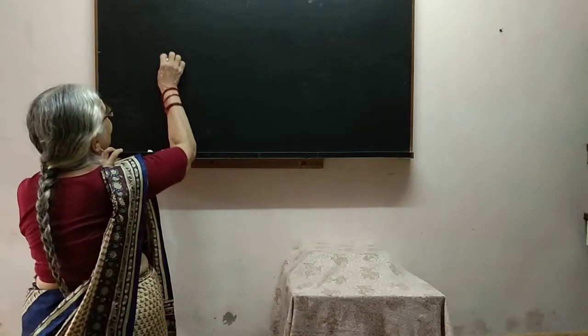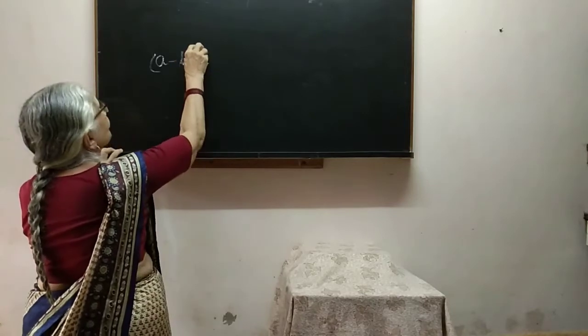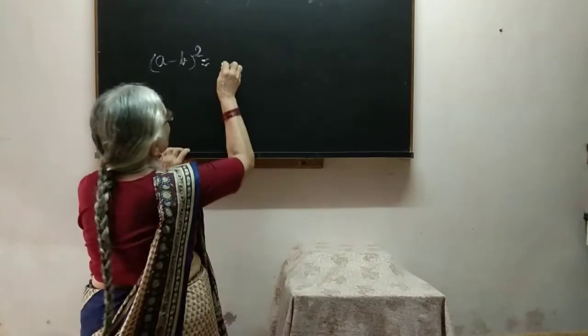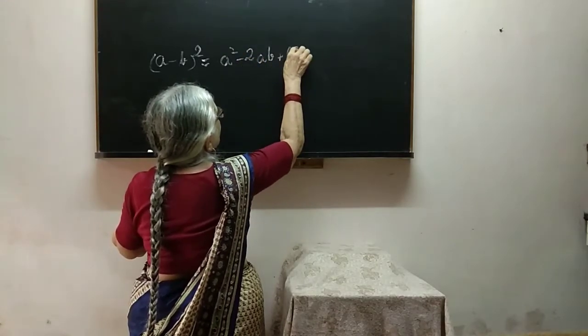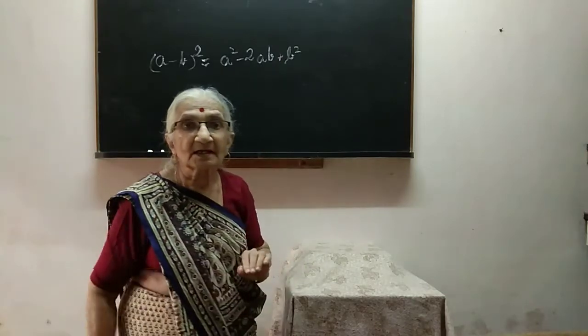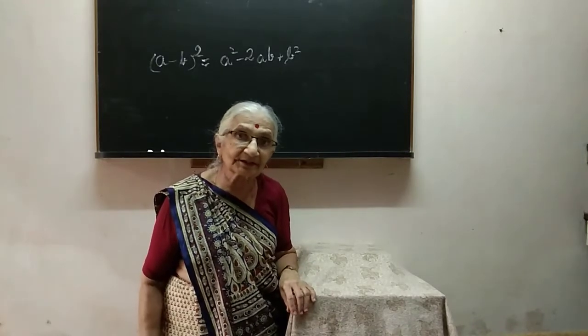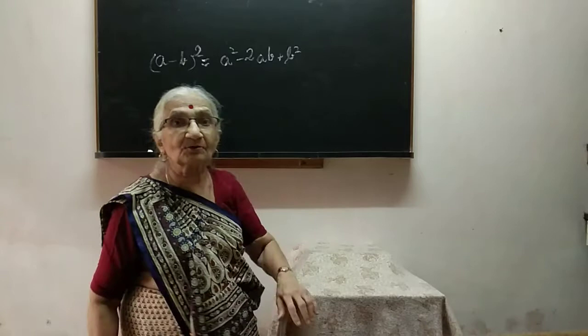Now we go one step in the other direction from A plus B whole square. Suppose instead of A plus B it is A minus B — that is, A minus B whole square. We know the identity for this: it is A square minus 2AB plus B square. Can we have a model for this too? Yes, and the nice thing is that it uses the same model as for A plus B whole square.